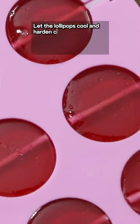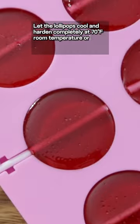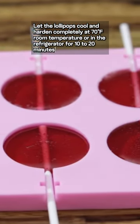Let the lollipops cool and harden completely at 70 degree Fahrenheit room temperature, or in the refrigerator for 10 to 20 minutes.